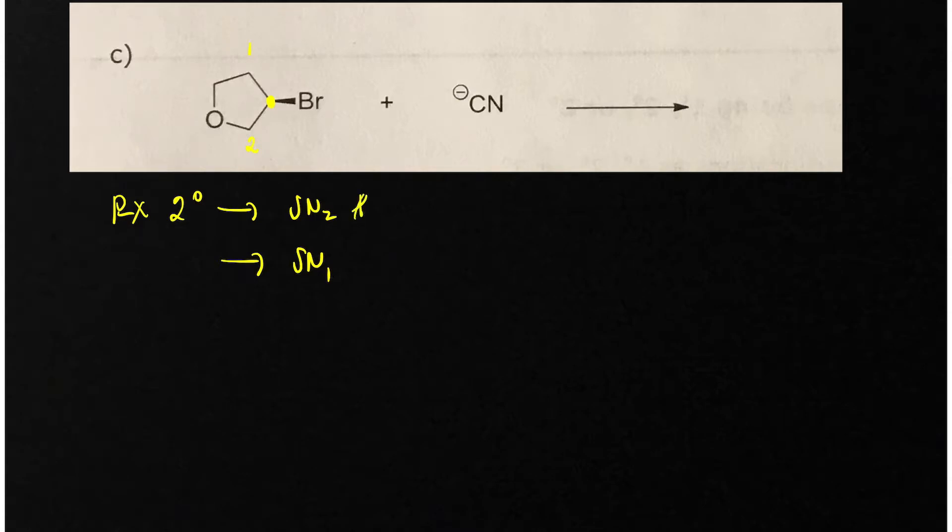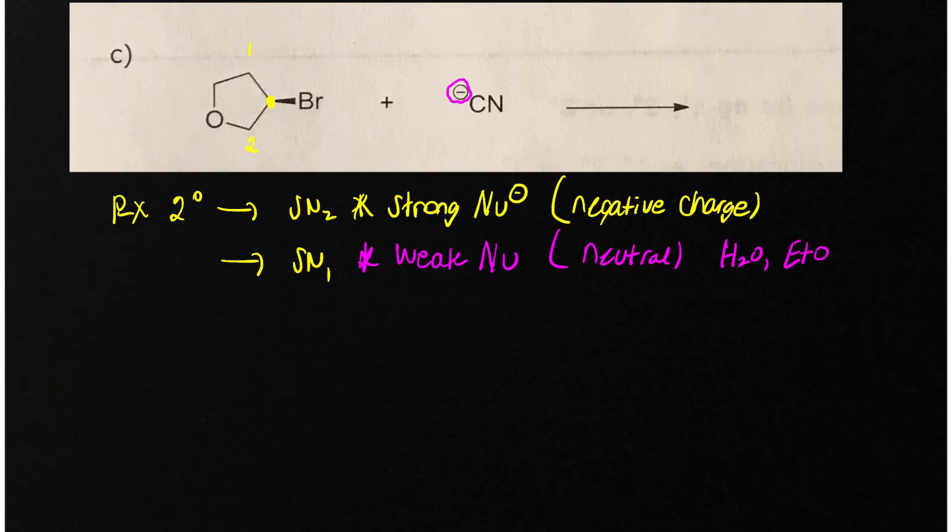The way to decide is to look at the strength of the nucleophile. If we have a strong nucleophile, that means something with a negative charge, it's going to be SN2. And I just want to emphasize here that that is a negative charge. If it's a weak nucleophile, notice how I'm leaving the negative charge off, this is going to be neutral, something like H2O, ethanol, something like that would be a neutral nucleophile.